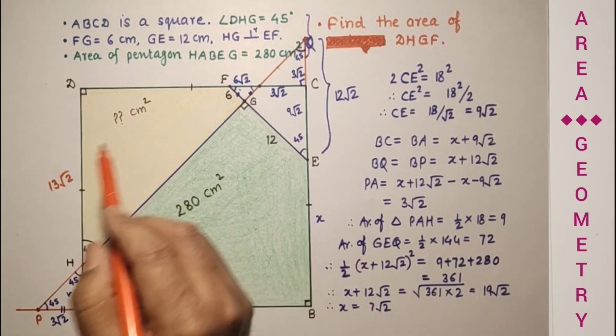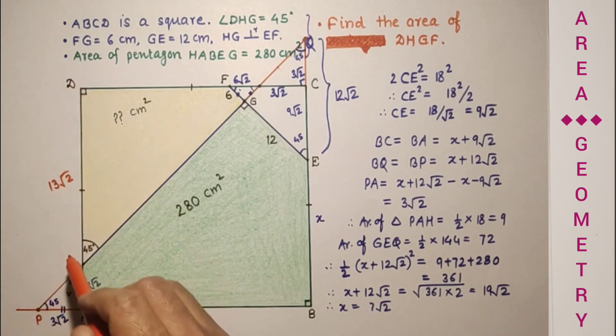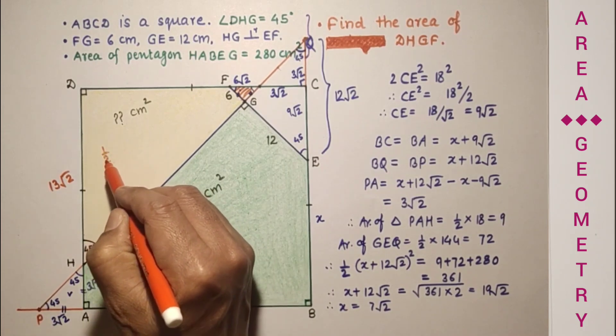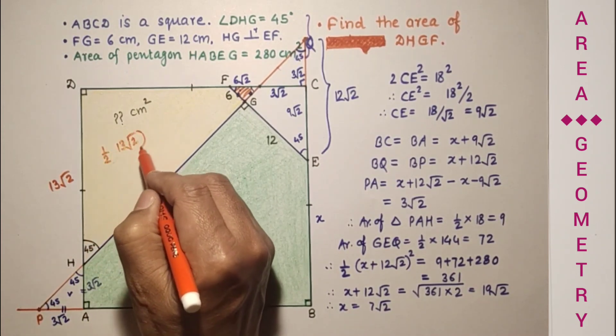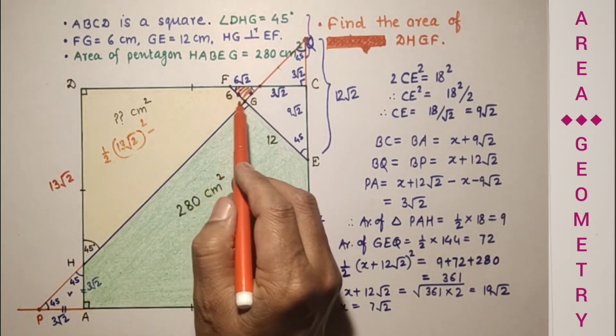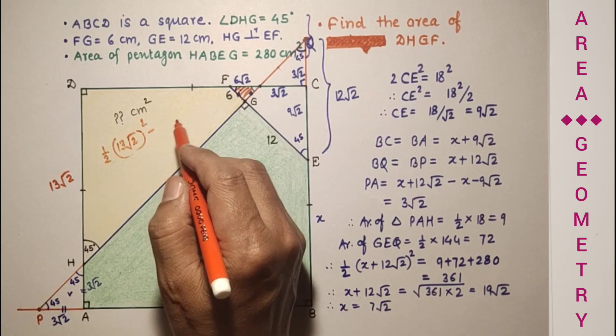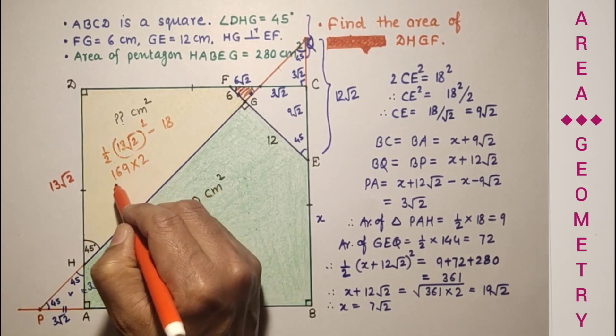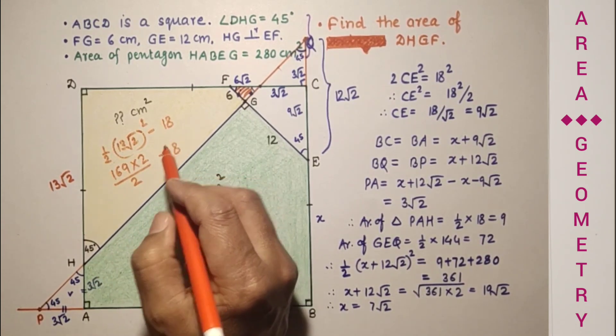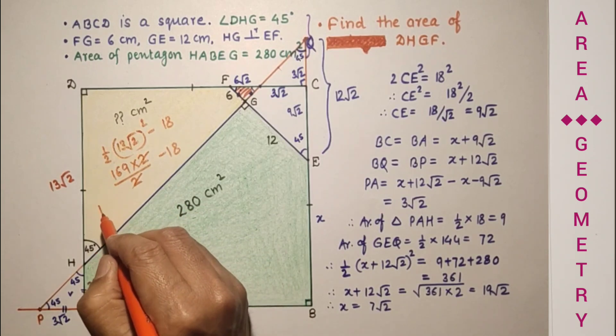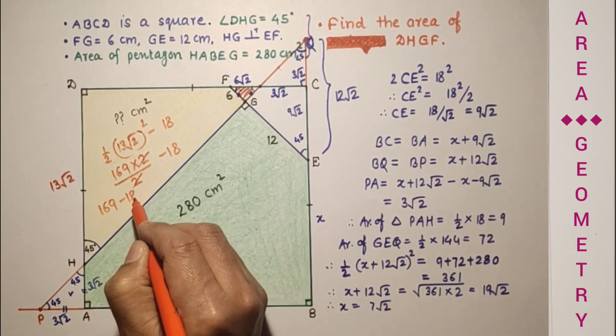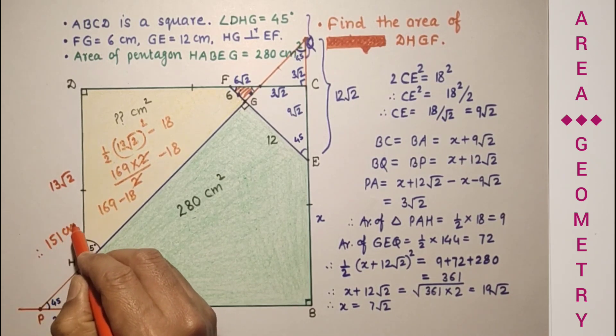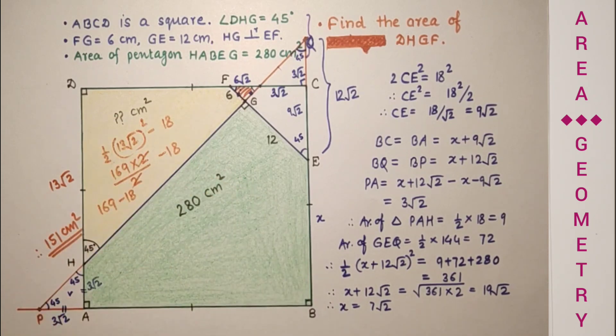So area of this shaded portion will be this area minus this area. That is half into 13 root 2 square minus this area, which is 6 into 6 by 2, which is 36 by 2, which is 18. So 169 into 2 by 2 minus 18. So 169 minus 18, it will be 151 centimeter square. Area of this shaded part is 151 centimeter square.